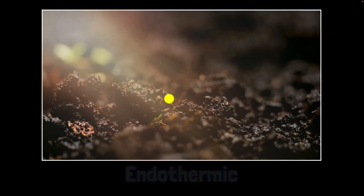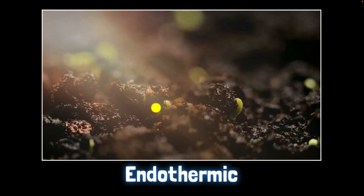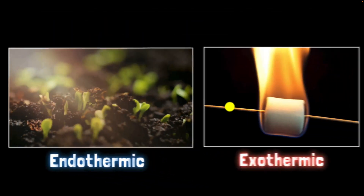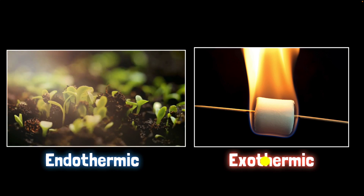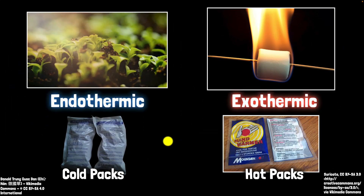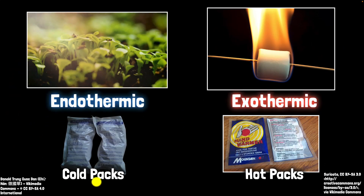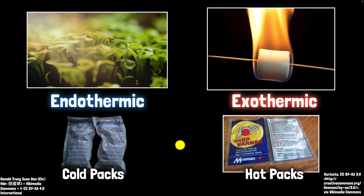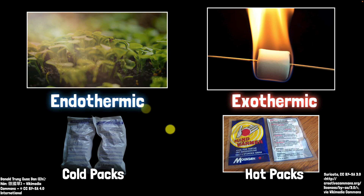Certain chemical reactions are endothermic, like the ones carried out by plants, while others like burning a marshmallow are exothermic. This is pretty useful — we can use it to build things like cold packs and hot packs. But how do we control how much energy is absorbed or released, and how quickly? That's what we want to talk about in this video.